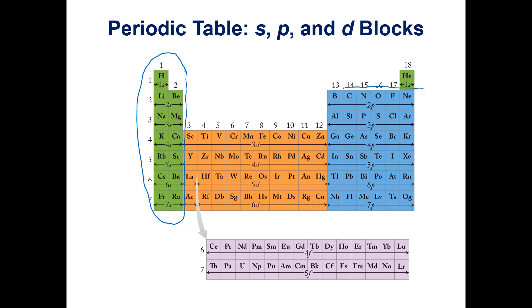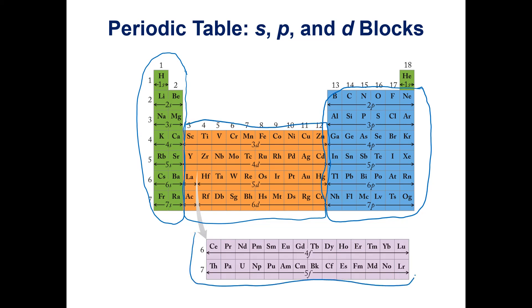On the right side of the periodic table is the p block — remember that starting with boron is actually the second row, so that block starts with 2p. In the middle, the transition metals form the d block, and the inner transition metals at the bottom form the f block. You can use this as a guide when writing out electron configurations.